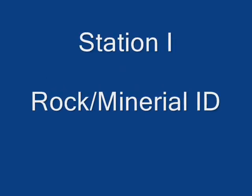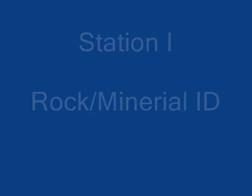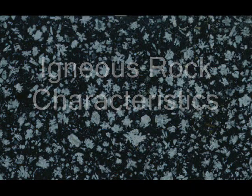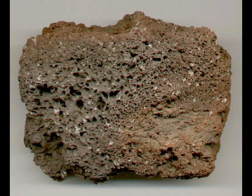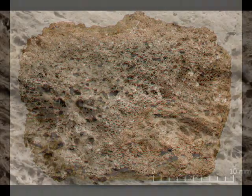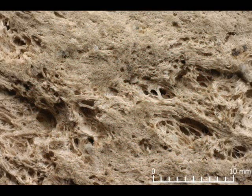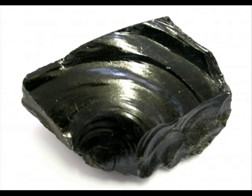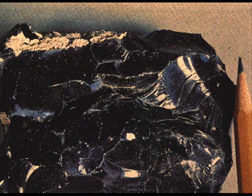It's a good idea to review the rock and mineral characteristics. Igneous rock characteristics include intergrown crystals that are very visible. Sometimes you'll find gas pockets or air pockets in the rock — that's known as vesicular conditions. Any kind of glassy texture is also characteristic of igneous rocks.